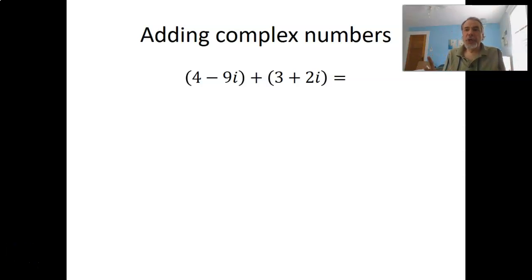When you're adding complex numbers, you can kind of just pretend that the i is a variable, like x or y, and you're combining like terms. So you're adding together the real parts and combining the imaginary parts. For example, 4 minus 9i plus 3 plus 2i equals 7 minus 7i. 4 plus 3 is 7, and the minus 9i plus 2i equals minus 7i. And that's it. That's all there is to adding.